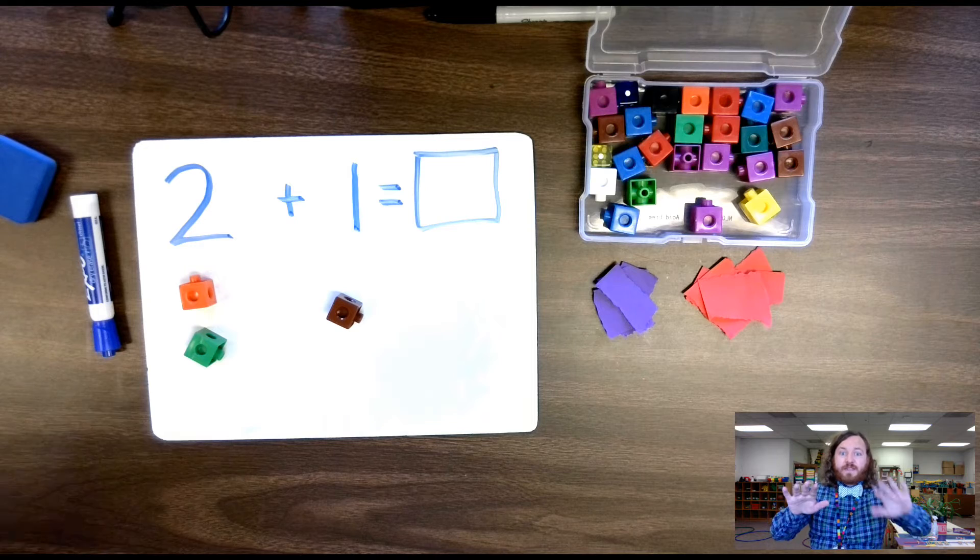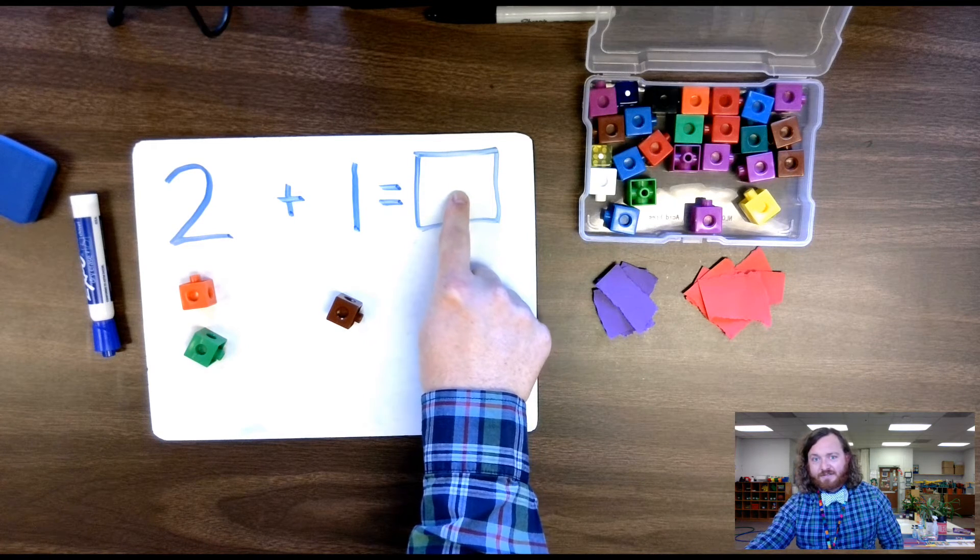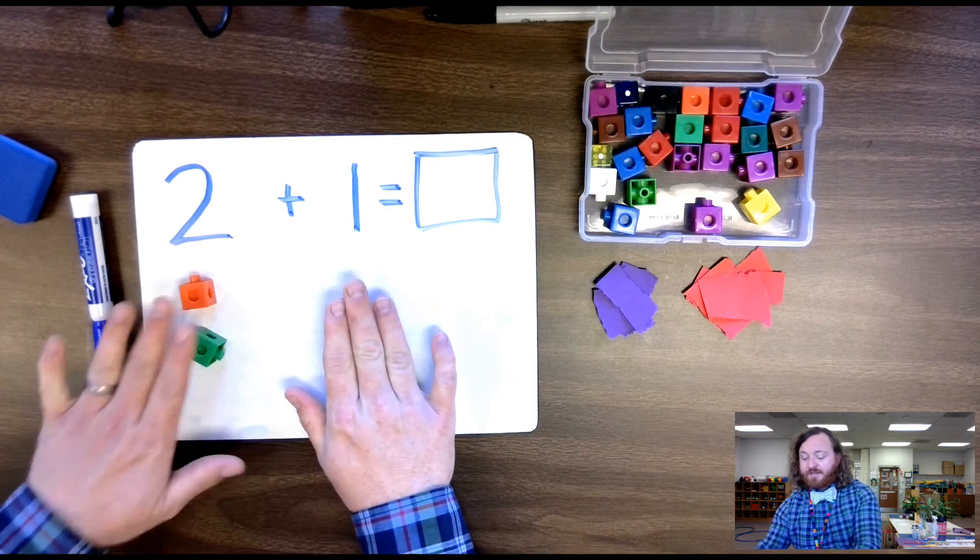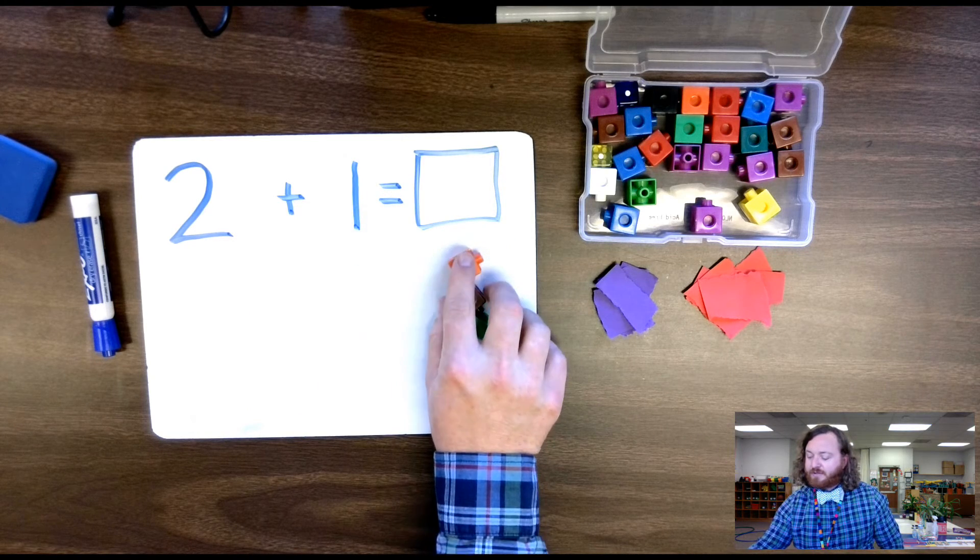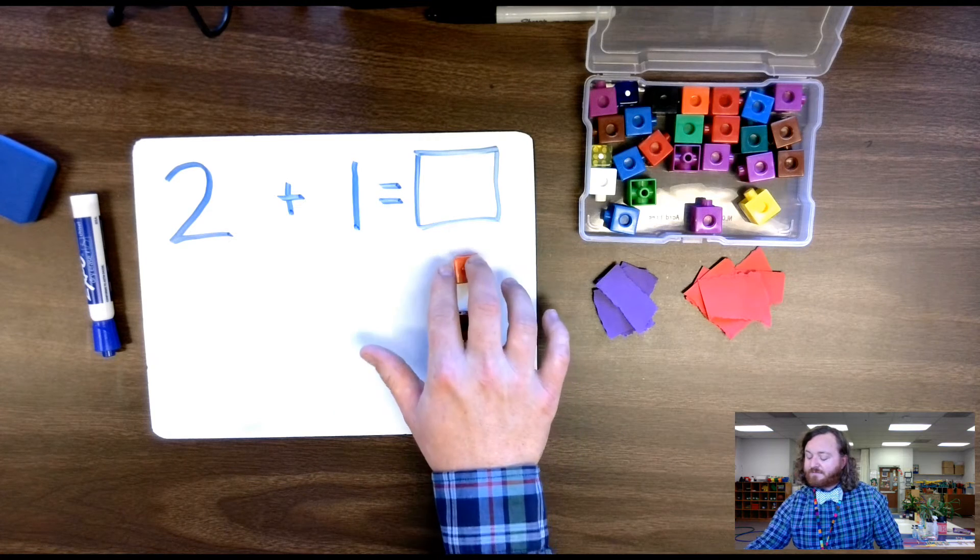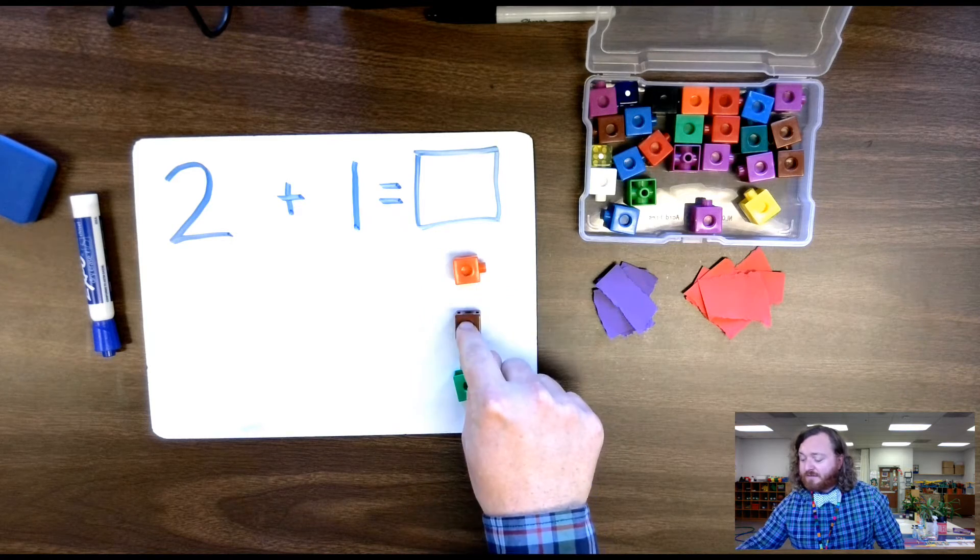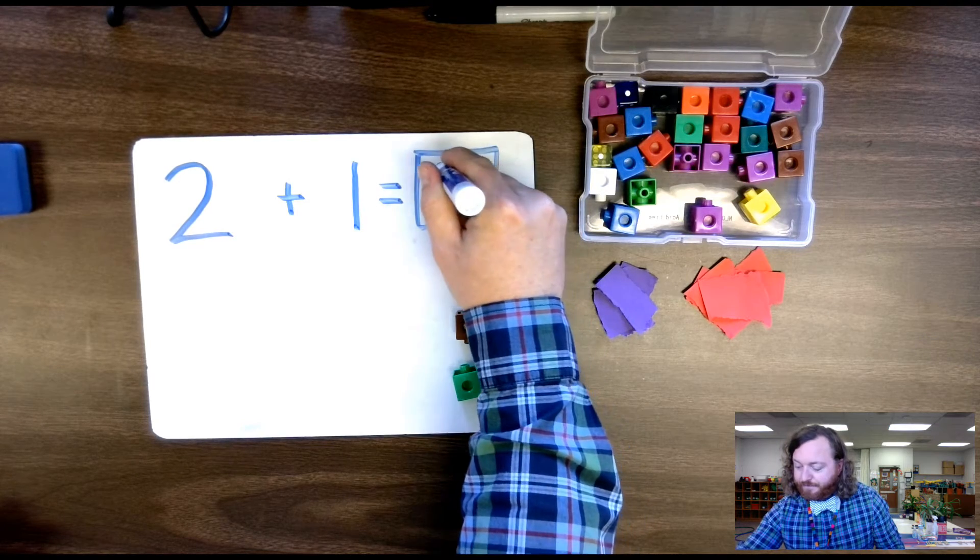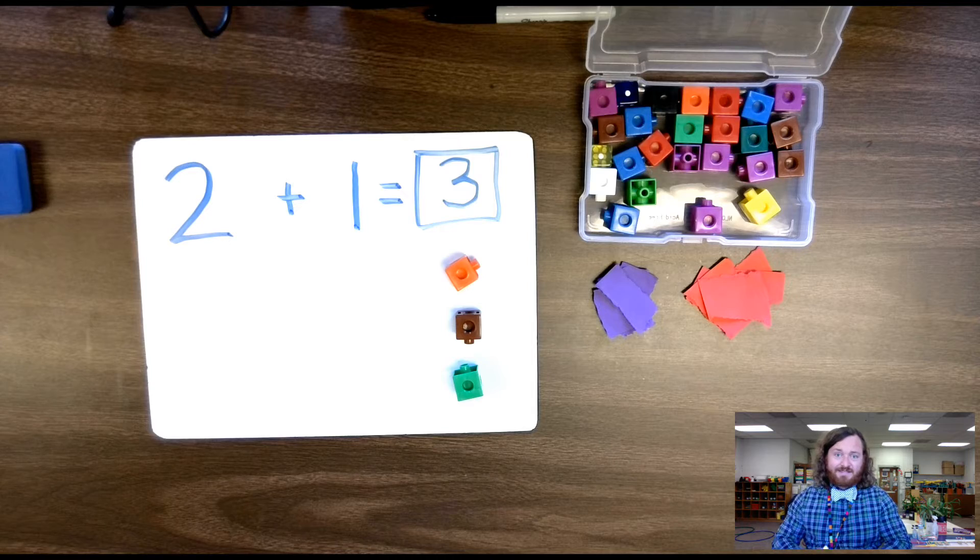Now, since we're adding, we're putting things together to find the sum. The sum is our answer to the addition problem. So two plus one equals, I'm going to put them together. I'm going to slide them over, alright? Now we're going to put them in a nice, neat column here. I've got them stacked. Now I'm going to count them. One, two, three. Three.